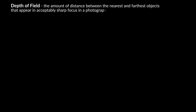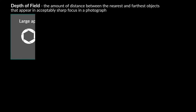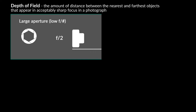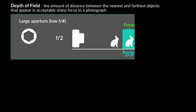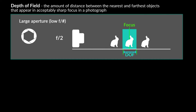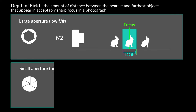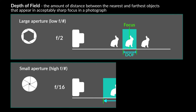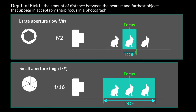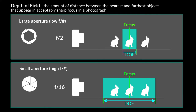Aperture controls depth of field via the amount of light it allows through. The lower your f-stop number, the more light is allowed through, and that allows you to narrow your field of focus. The converse is also true — the higher your f-stop number, the less light allowed through, the deeper your field of focus is going to be.